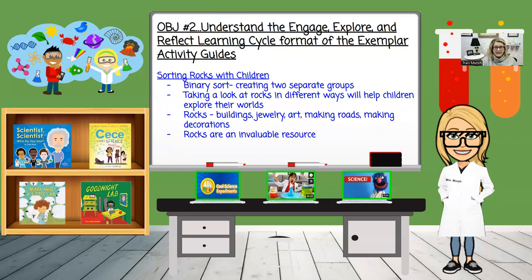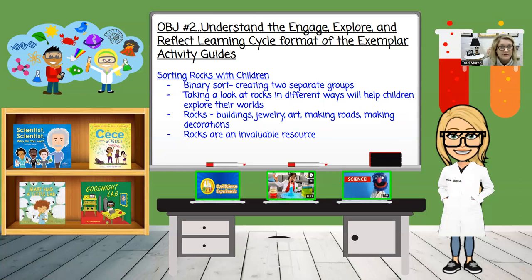After allowing children to freely explore a new item, it is time to do our concept with the item. This week, we are taking a look at children sorting rocks. It is time for children to get into groups and do a binary sort — that is creating two separate groups: one based on an attribute, and the other being any part of the collection that doesn't follow that attribute. So if I'm sorting rocks, I might choose an attribute such as smooth, and any rocks that feel smooth go into one pile, and the other rocks go into the other pile.